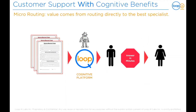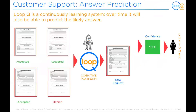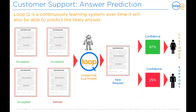Loop AI Labs uses cognitive RPA to augment the traditional routing method — we call this solution micro routing. The value of this solution is that when the service ticket is received, the Q robot routes it directly to the best suited department specialist, accelerating the speed of service and giving the specialist the agency to give their best service to their customers. Over time, as Loop Q continuously observes and learns from human employees, it is able to predict the likely answer to inbound requests based on the outcomes of past similar tickets and by utilizing confidence level.